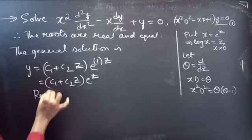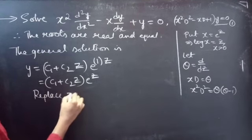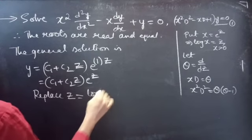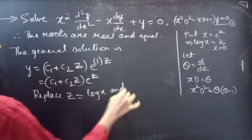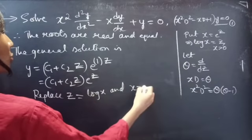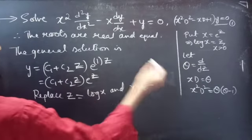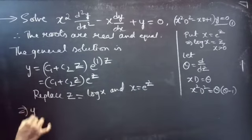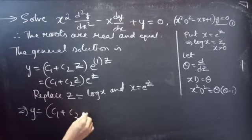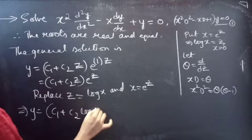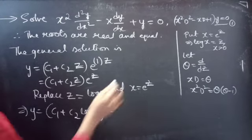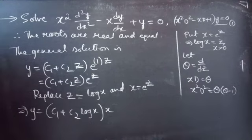Now replace z by log x and e^z by x to express the solution in terms of x. Then y equals (c1 plus c2·log x) times x, which is the required general solution.